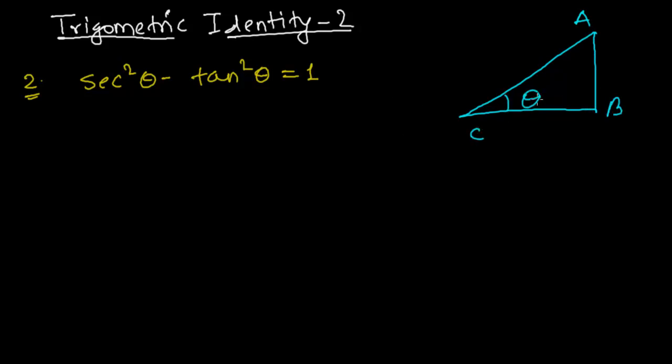Since this is the theta angle, the opposite side AB will be the perpendicular, and the side on which theta is seated, BC, will be the base. And the longest part is always the hypotenuse, that is H.